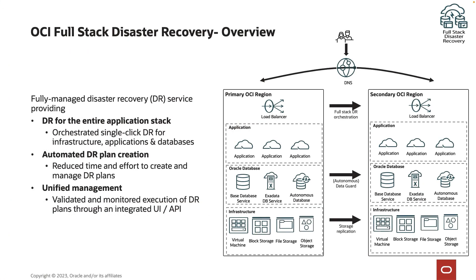Fullstack DR is a fully managed service within OCI. It helps to orchestrate the disaster recovery runtime operation for the entire application stack with a single click of a button. It provides an automated DR plan based on the members you add to the DR protection group, and it has flexibility to customize the group based on user-defined requirements. It also provides unified management with a single pane of glass to monitor, validate, and run all the DR operations.